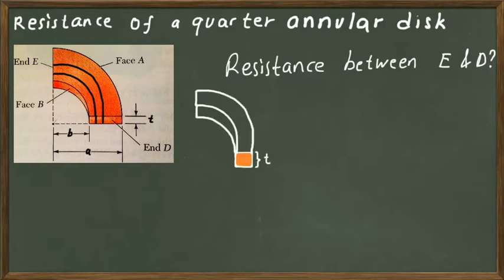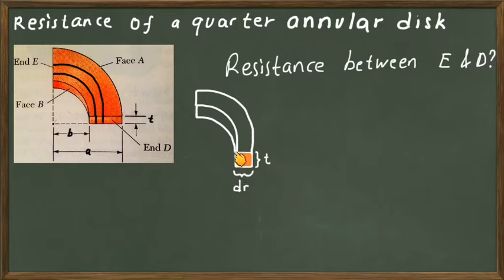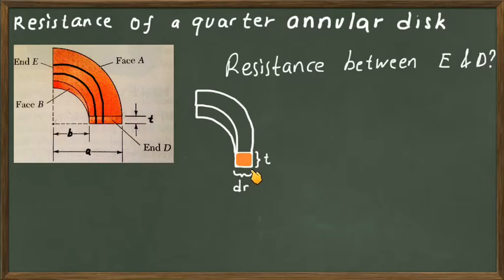These quarter rings are added in parallel from face B to face A. The thickness of the slab in this direction is t, which is the same everywhere on the material. The lateral dimension of the cross section of each ring is called dr, because the rings are changing from the center to the outer face in the radial direction.